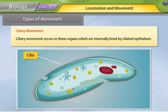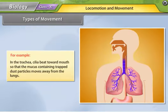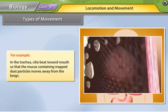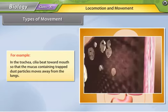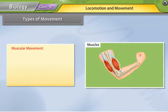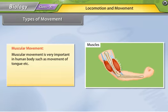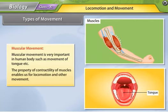For example, in the trachea, cilia beat towards the mouth so that the mucus containing trapped dust particles moves away from the lungs. Muscular movement is very important in the human body, such as movement of the tongue. The property of contractility of muscles enables us for locomotion and other movement.